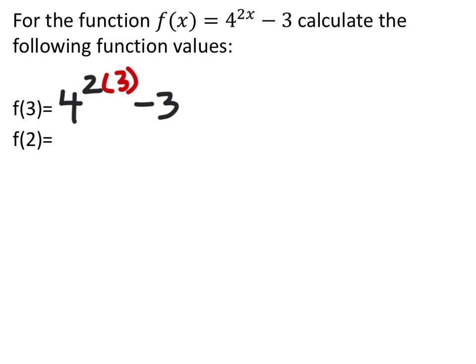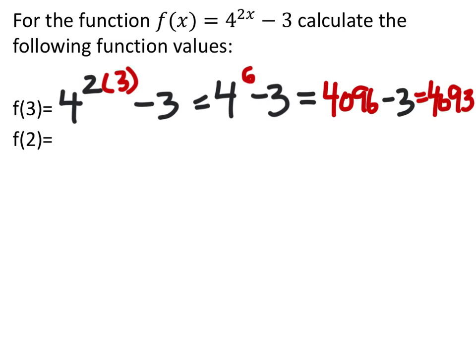And then we'll multiply that 2 and 3, and then we'll do powers, 4 to the power of 6, and then we'll do that, 4096 minus 3, and that should be our answer there. And that gives us 4093, so f of 3 equals 4093.